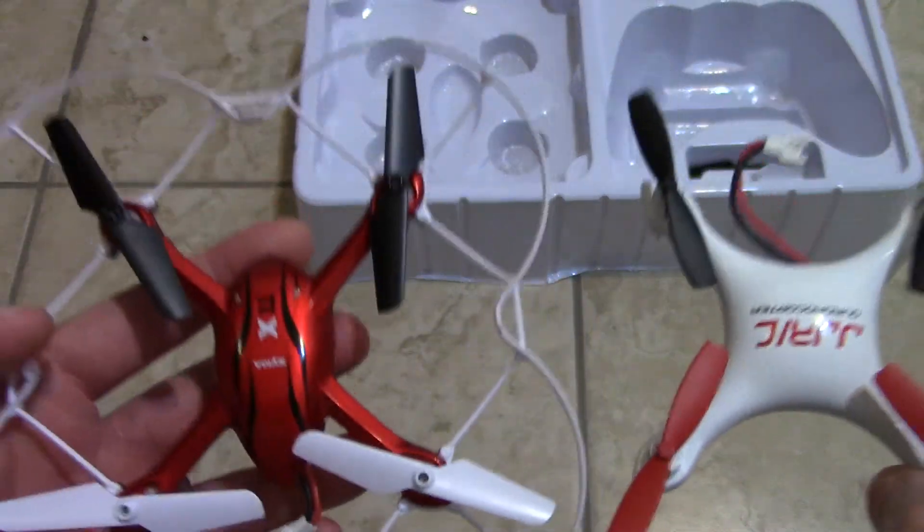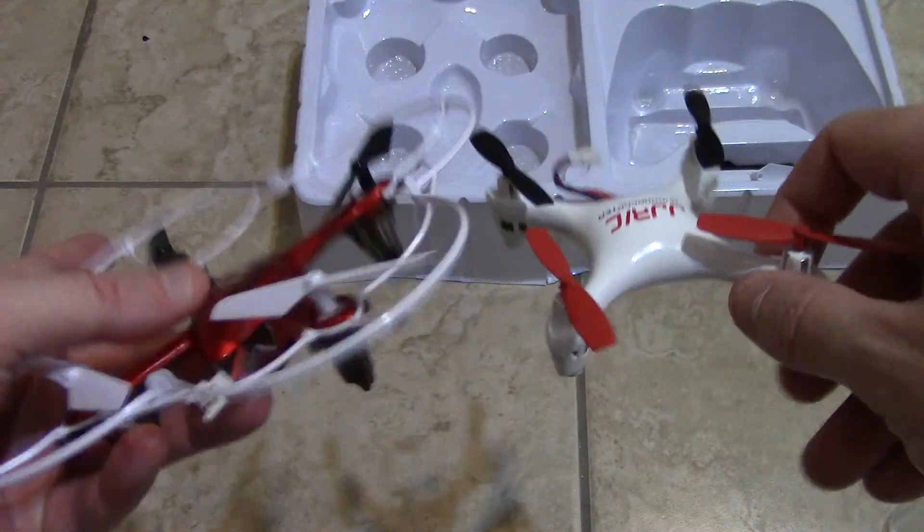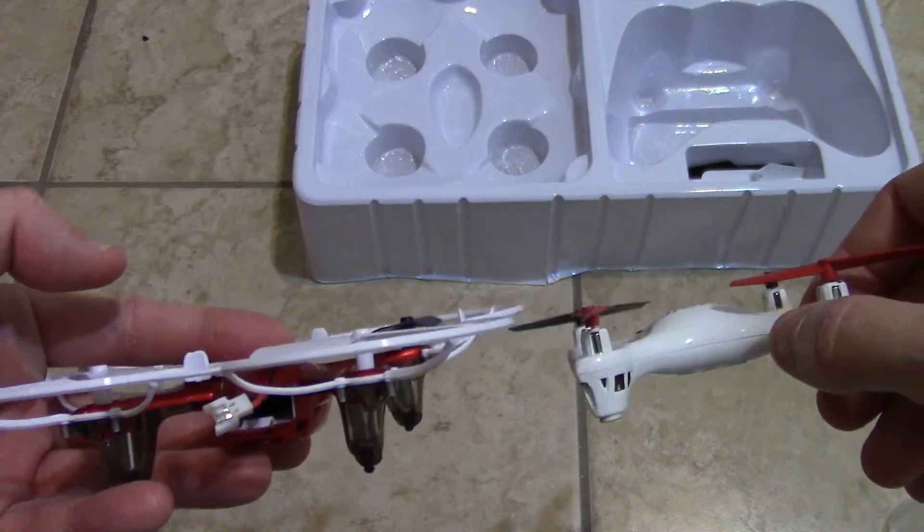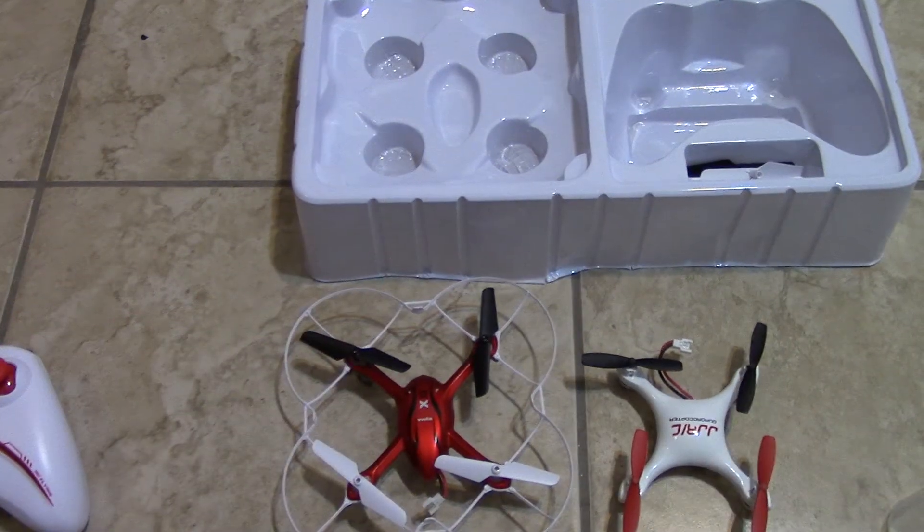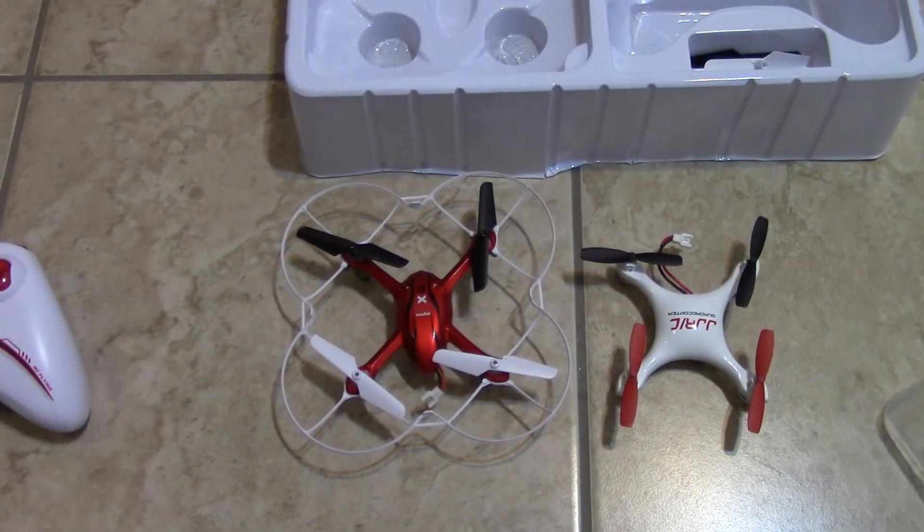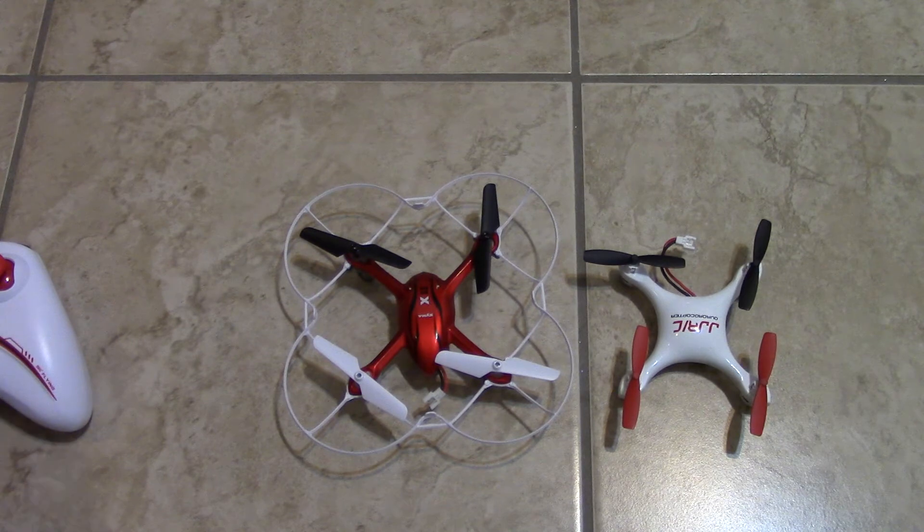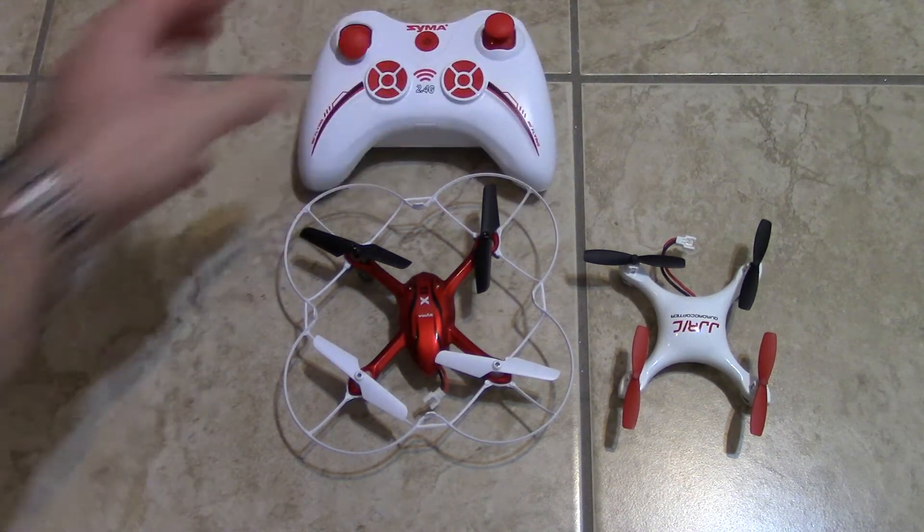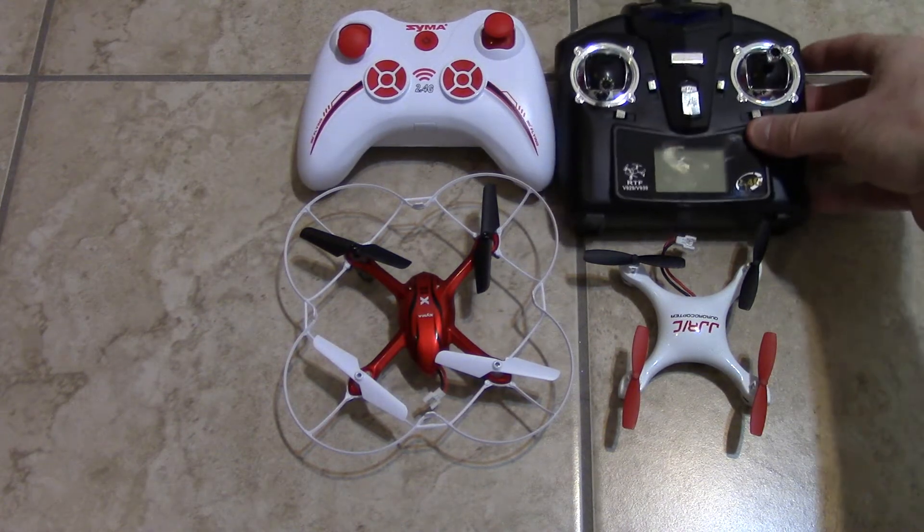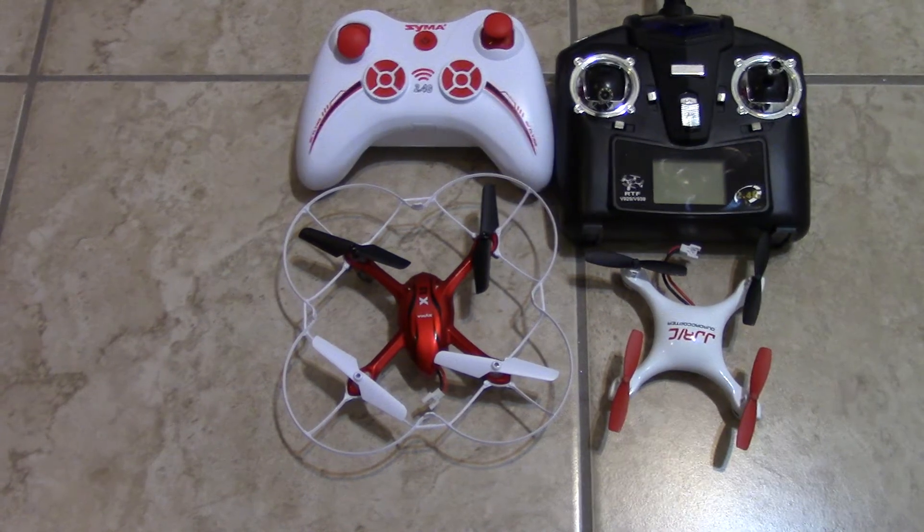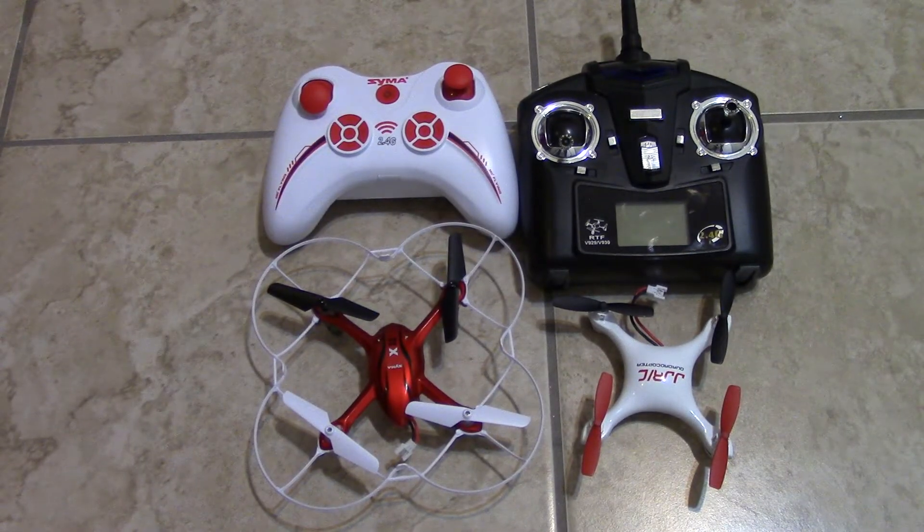It's gonna be a long vid. So this is the JJRC versus the Syma. So I'm gonna place it here on the side so you can see a little comparison. I'm gonna put it on the ground here, just let me angle the camera back like that. So let's put the controllers too right here.